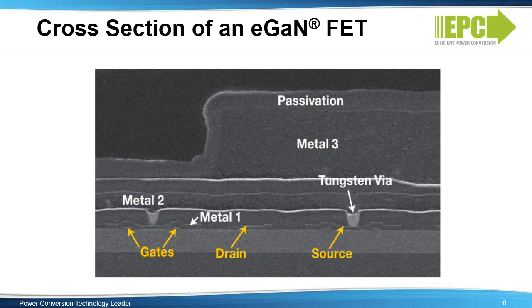EPC manufactures this device in a standard silicon foundry in Taiwan, right alongside CMOS wafers, which allows manufacturing to increase production volumes quickly and at low costs.